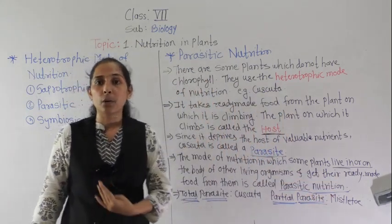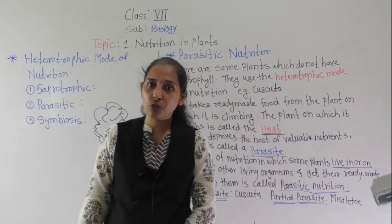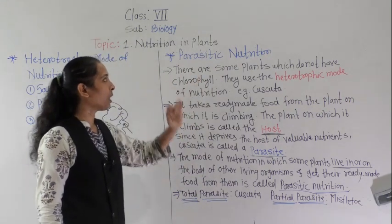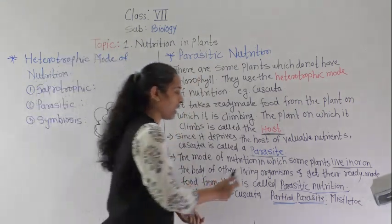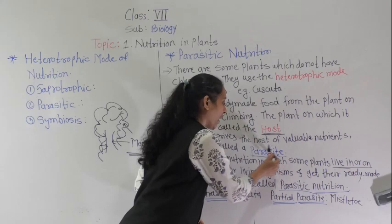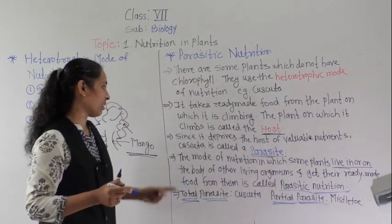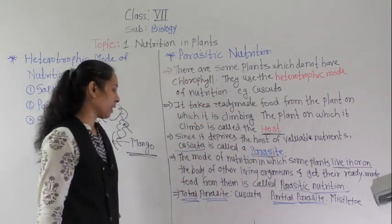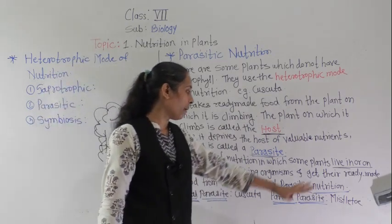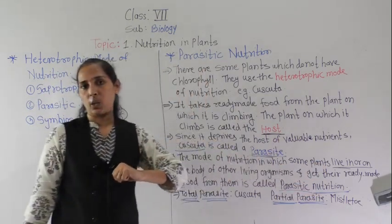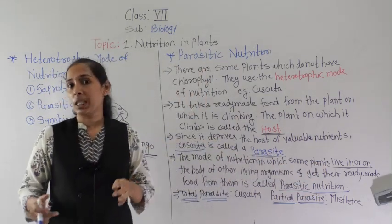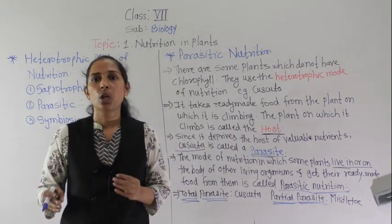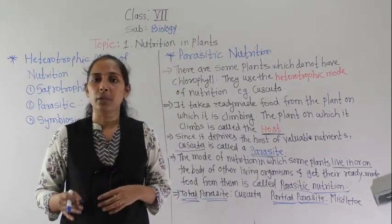So this is all about parasitic nutrition. The organisms showing parasitic nutrition are called parasites. We discussed one example — cascuta — and we also discussed about total parasites and partial parasites. This is all for today; we will meet in the next video. Goodbye.